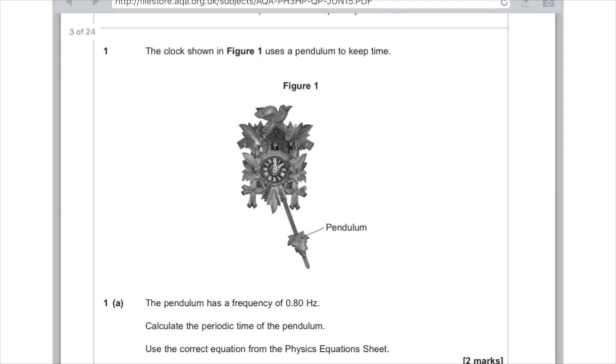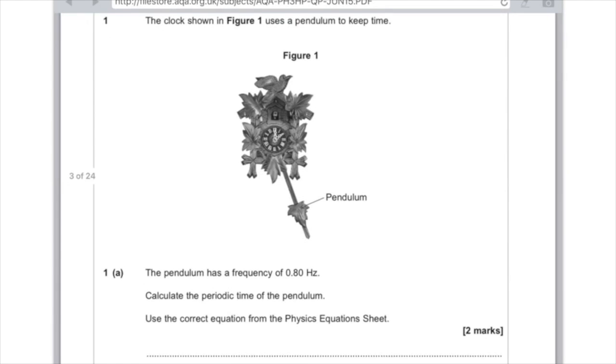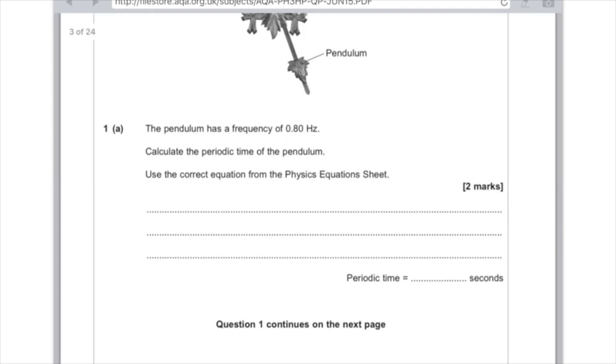Question 1. The clock shown in figure 1 uses a pendulum to keep time. The pendulum has a frequency of 0.8 Hz. Calculate the periodic time of the pendulum. Use the correct equation from the physics equation sheet. So using the correct equation means doing time equals 1 over frequency. Therefore 1 divided by 0.8 Hz to give us an answer of 1.25 seconds.